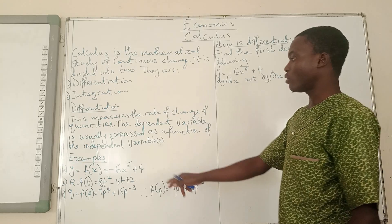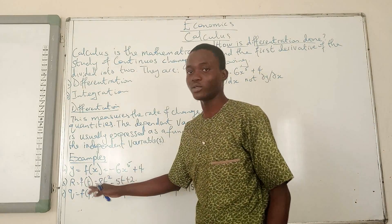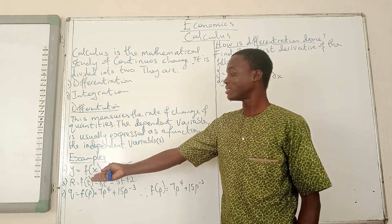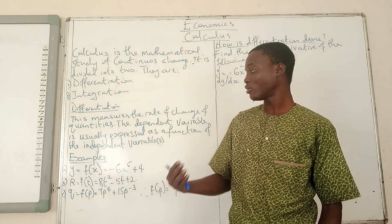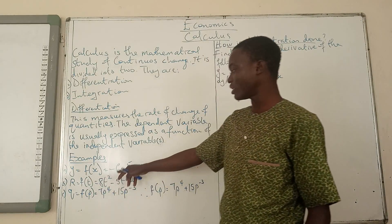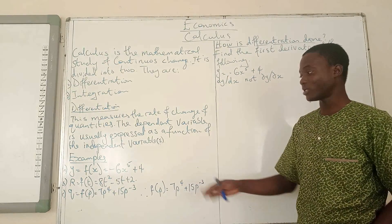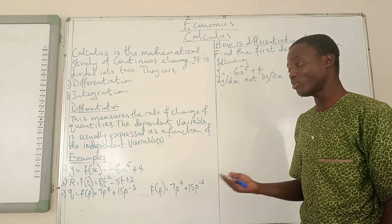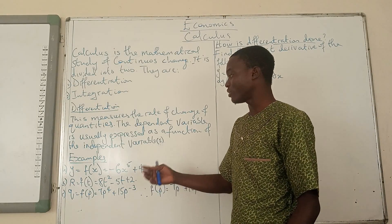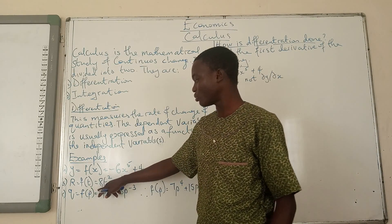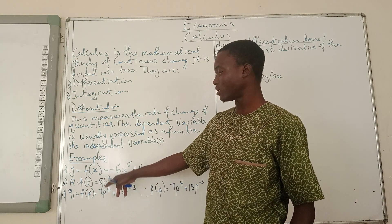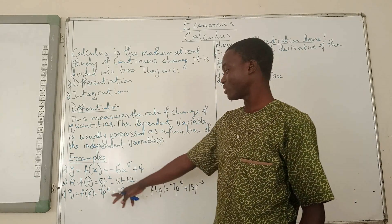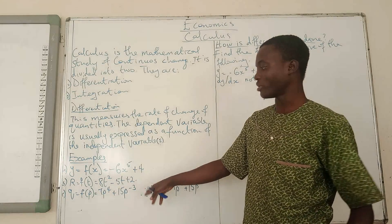There are examples on the board. We have something like: y is a function of x, which is minus 6x raised to the power 5 plus 4. That function tells us y is a dependent variable and x is the independent variable. Then we have R as a function of t, which is 8t squared minus 5 plus 2. And we also have q as a function of price, giving us 7p raised to power 4 plus 15t raised to power minus 3.